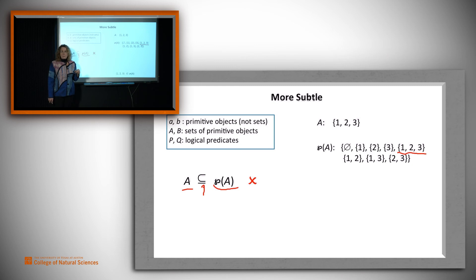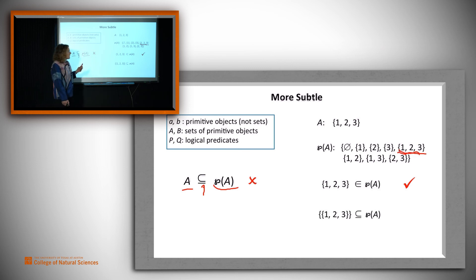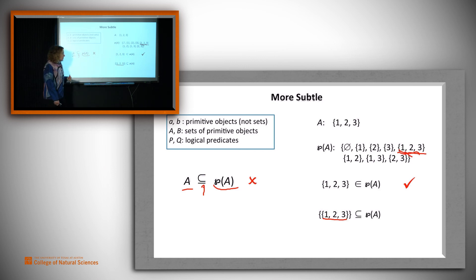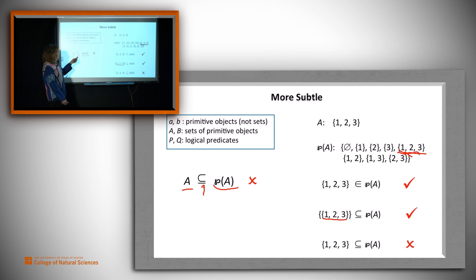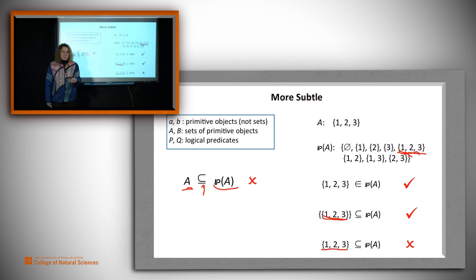Let's look at claims we might want to make. '{1,2,3} is an element of the power set of A' — that makes sense; there it is. '{{1,2,3}} is a subset of the power set of A' — that makes sense: we have a set whose members are sets that are in the power set of A, and that's obviously true. But '{1,2,3} is a subset of the power set of A' — that is nonsense. This is the same claim we just made, substituting the specific example for A. {1,2,3} cannot be a subset of the power set of A, because anything that's a subset of the power set of A has to itself be a set of sets — and {1,2,3} is a set of primitive elements. So if we're keeping our types straight, that's nonsense.